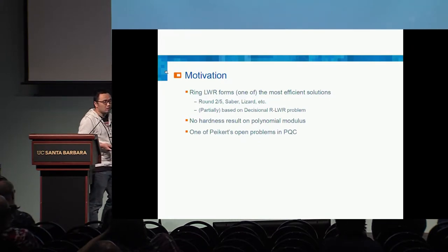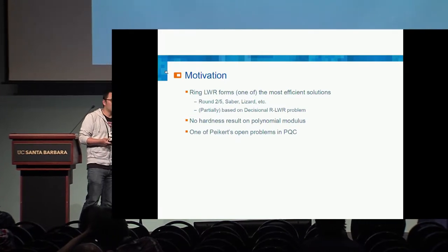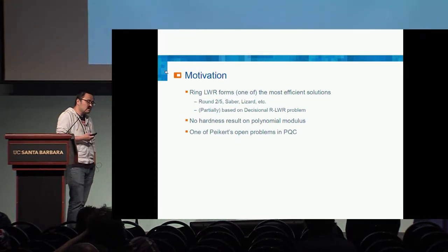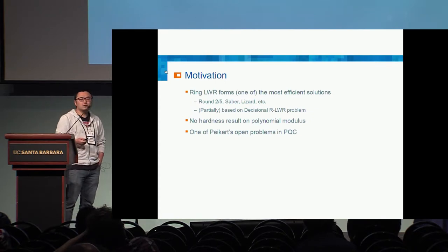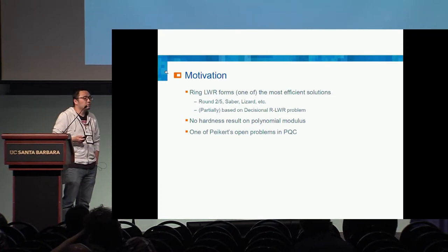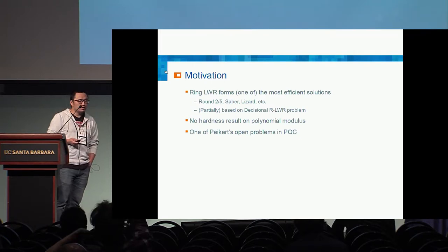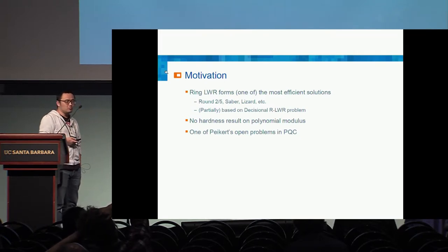The motivation is as follows. There are a few NIST submissions such as Round 2, Round 5, Sabre, and Lizard. They are all partially based on the decisional ring LWR problem, but we don't have a security proof for this problem — at least not for the problems with polynomial modulus.